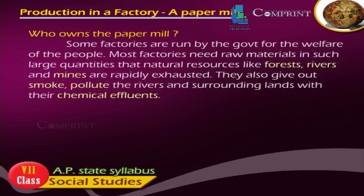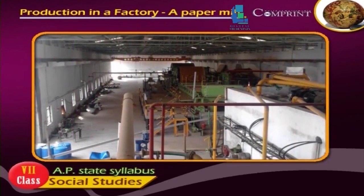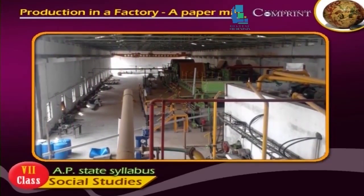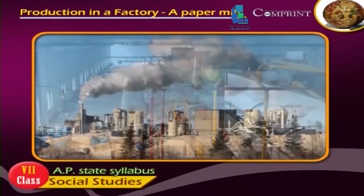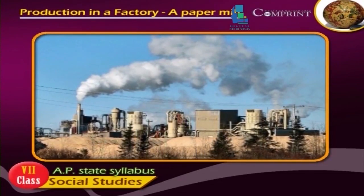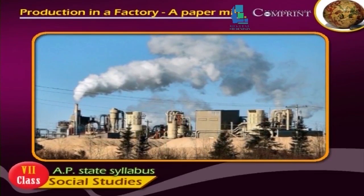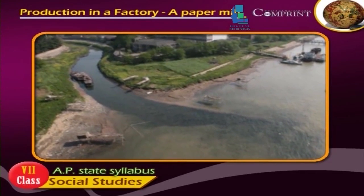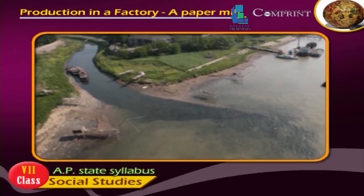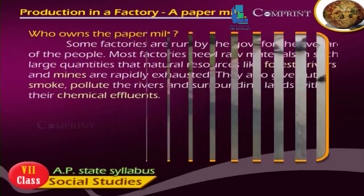Some factories are run by the government for the welfare of the people. Most factories need raw material in such large quantities that natural resources like forests, rivers, and mines are rapidly exhausted. They also give out smoke and pollute the rivers and surrounding lands with their chemical effluents.